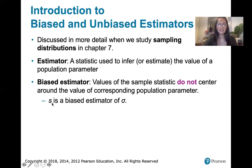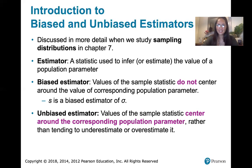The sample standard deviation s turns out to be a biased estimator of the population standard deviation sigma. An unbiased estimator actually estimates what we intend for it to estimate — the values of the sample statistic actually center around the corresponding population parameter.